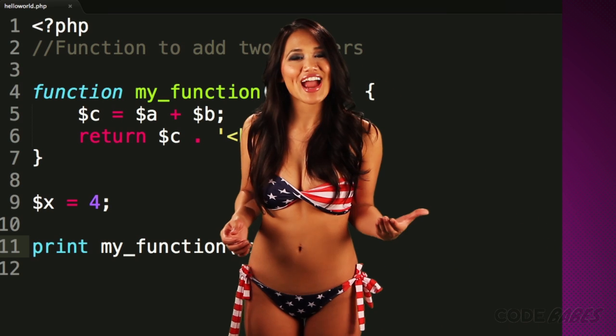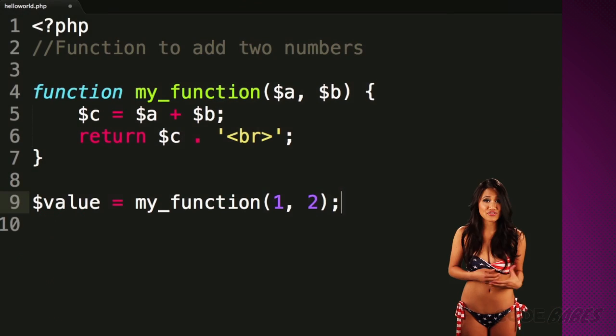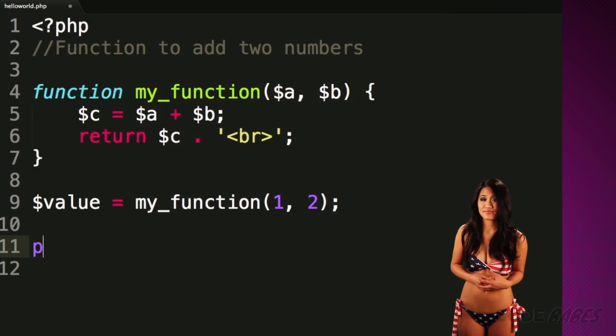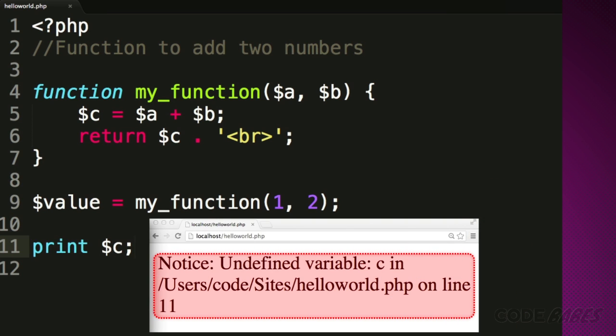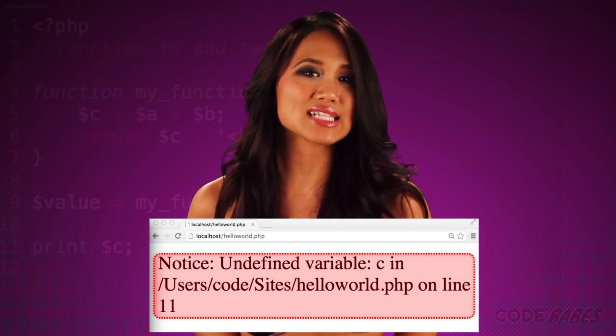What if we try to access the variable C from outside the function? This will cause an error. That's because the variable C isn't available from outside the function. This is known as variable scope. Any variables created inside the function are only available from within it.